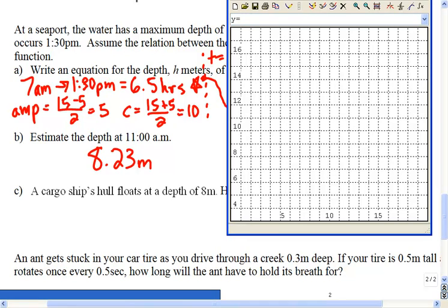The model that we talked about was y equals 5 cosine 2π over 13 times (x minus 7) plus 10. So there is the tide rising and falling where its highest depth is at 7 a.m. And it says that the boat needs 8 meters of water. So there's the boat.